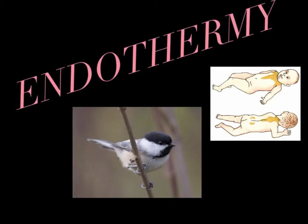Endotherms are able to adjust heat production through thermogenesis in order to match the varying rates of heat loss in the organism. Thermogenesis may be increased by muscle activity, such as shivering or moving. For some mammals, select hormones are able to increase the metabolic activity in mitochondria, and rather than producing ATP, the mitochondria may produce heat. This is called non-shivering thermogenesis.